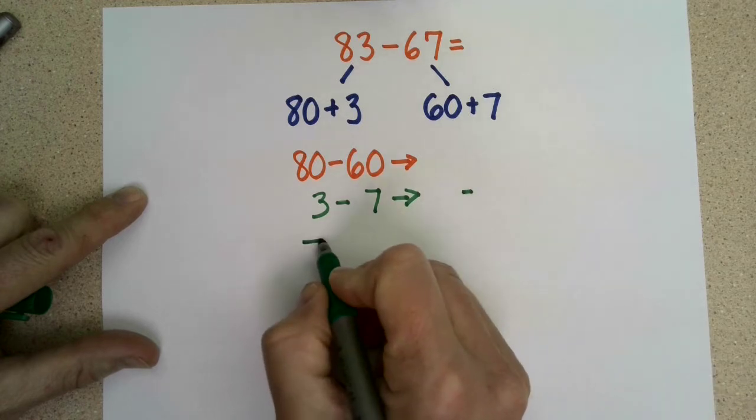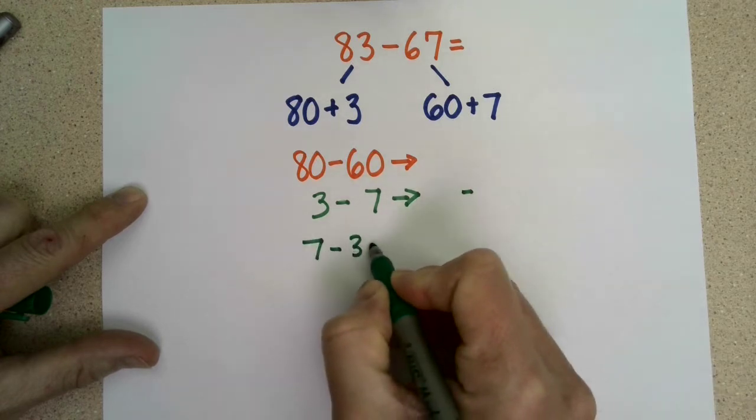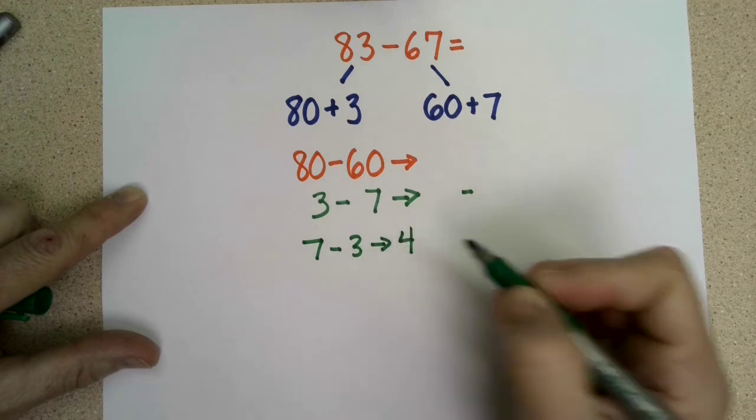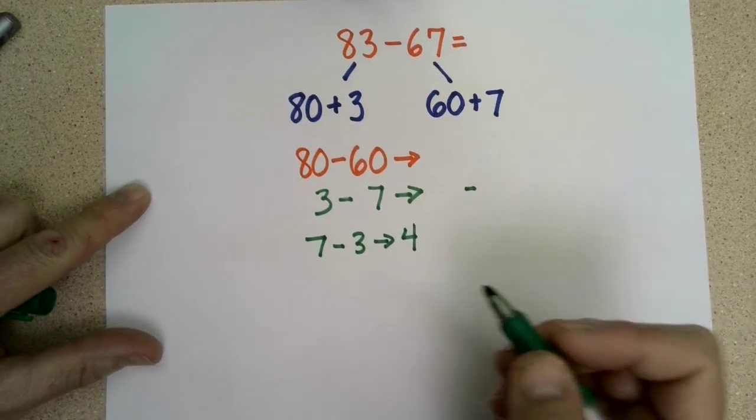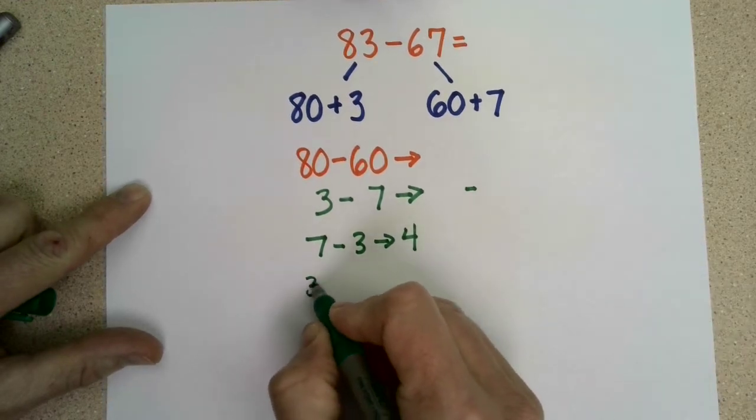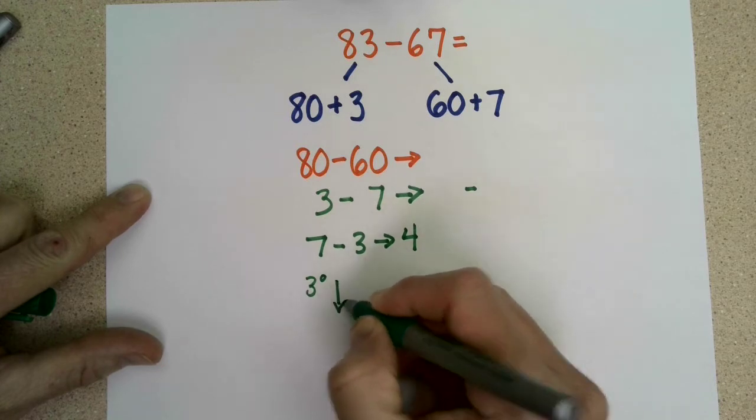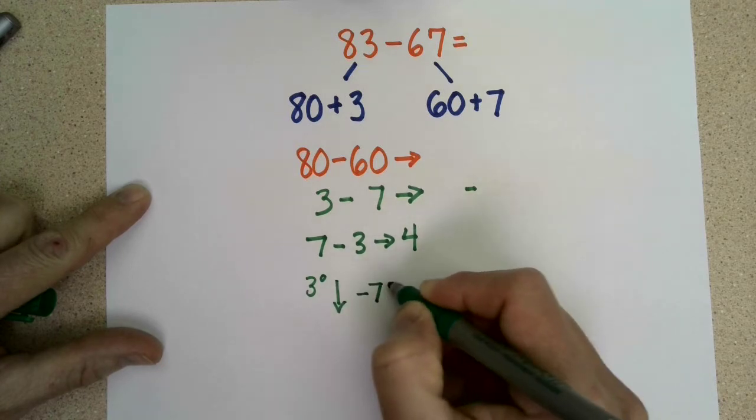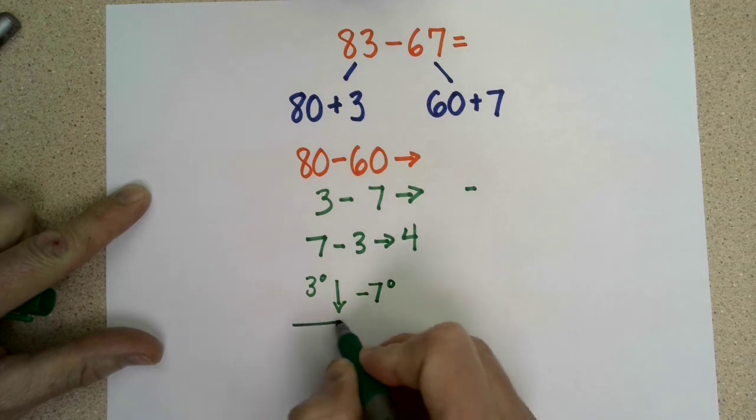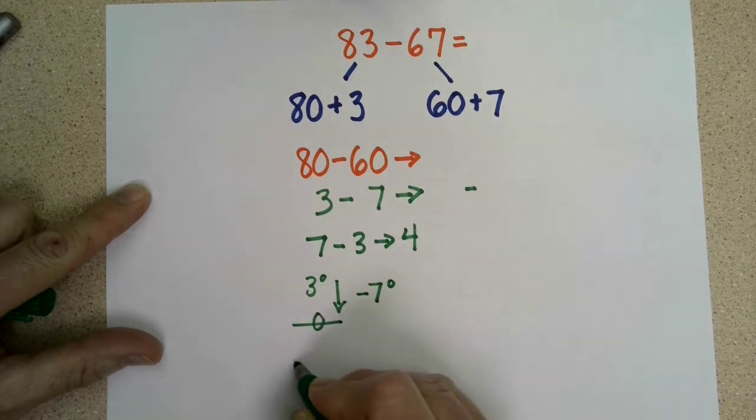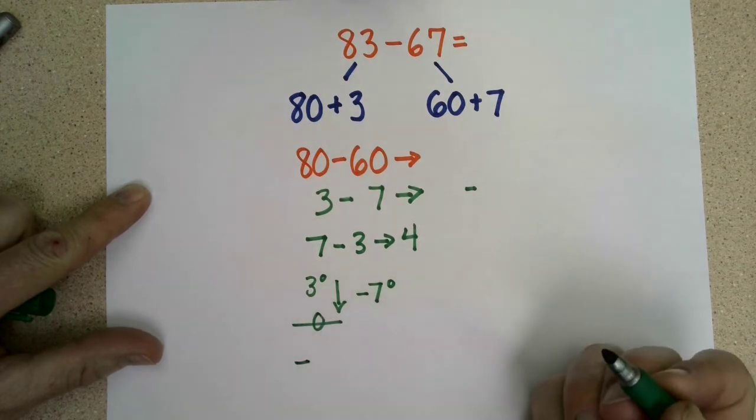So we know if 7 minus 3 is going to be equal to 4. We also know that if it's 3 degrees outside and the temperature drops 7 degrees, that we're going to go past 0, and we're going to have a negative number. We know that because we live in Minnesota.